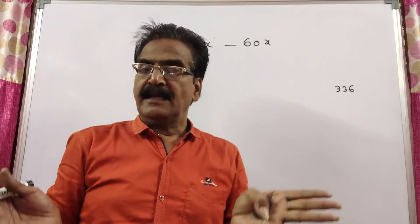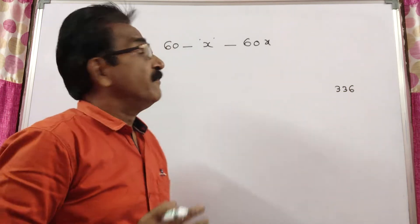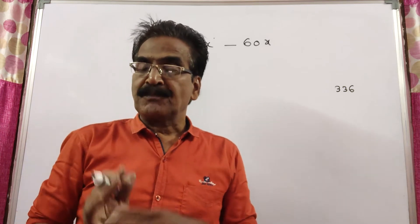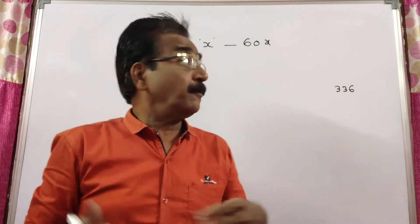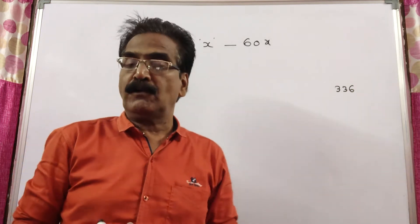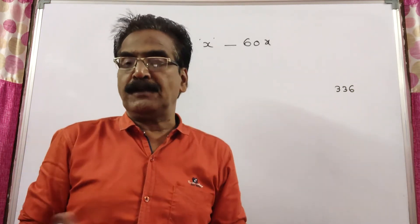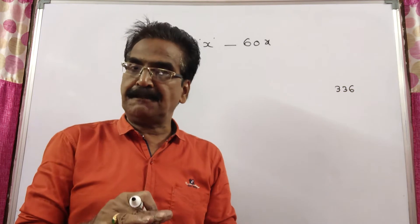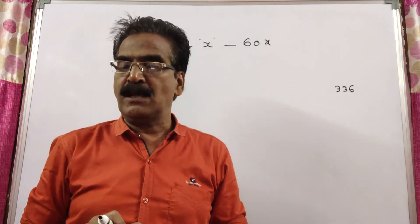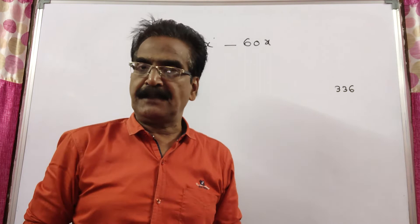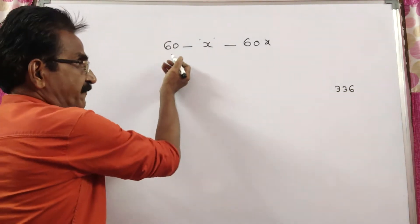Friends, a librarian has purchased 60 books for his library. Later he found that by spending Rs.336 more, he could get 4 more books and the average price of each book is reduced by 1 rupee. Then what is the previous average price of each book?